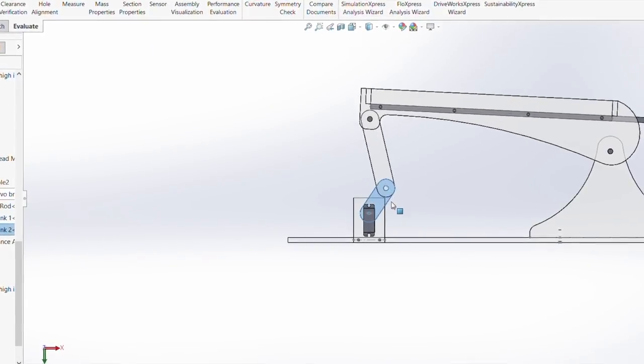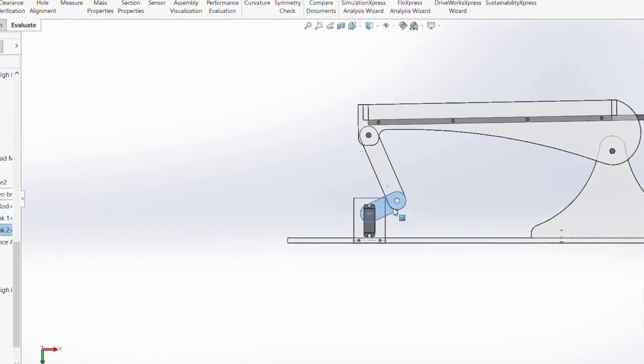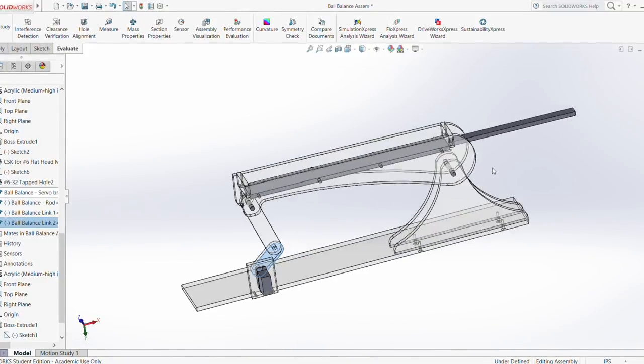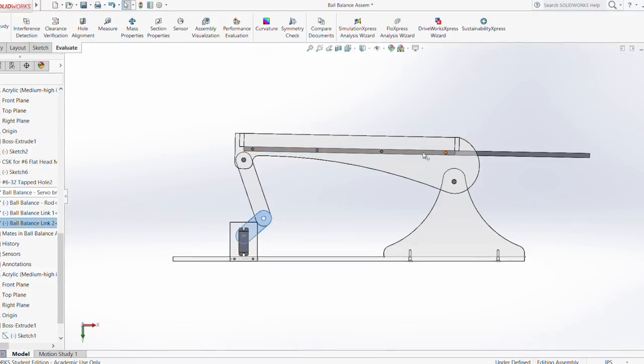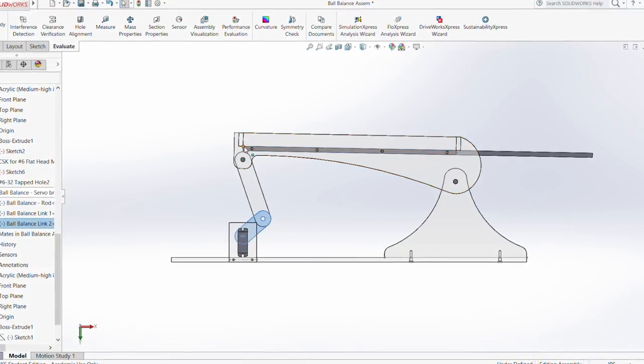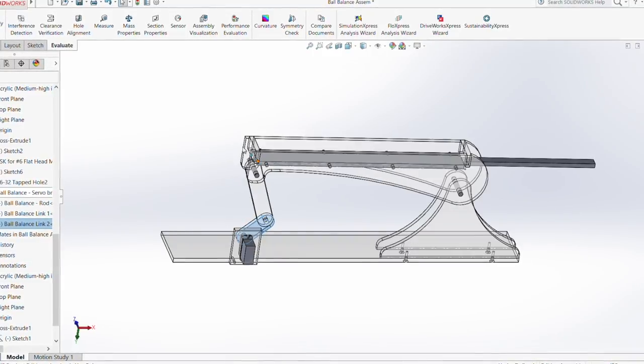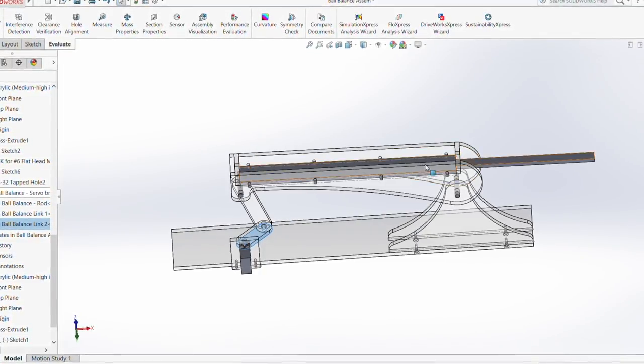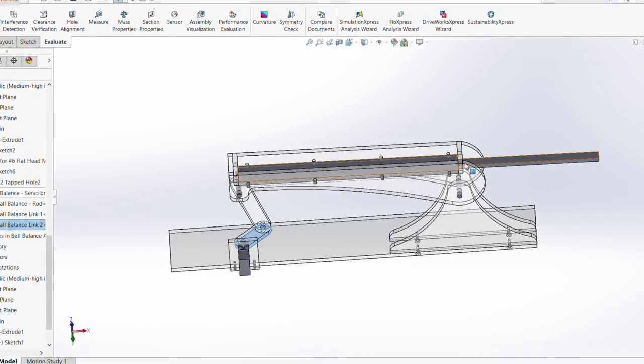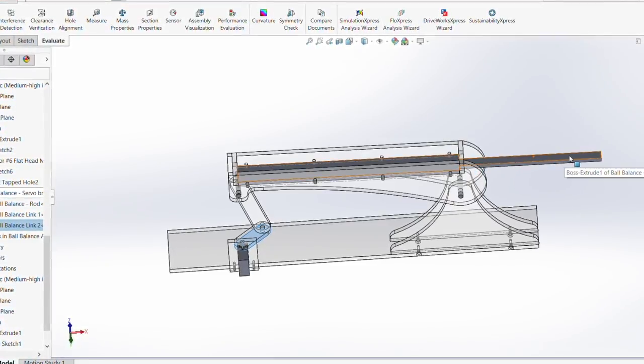Our design was a cantilever, essentially, so the full 12 inches starts at the pivot and just goes in one direction. The ball rolls along here.